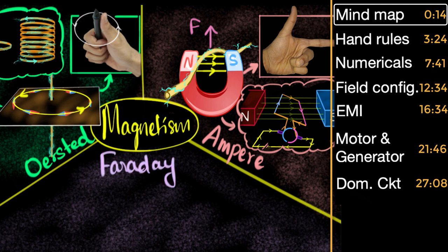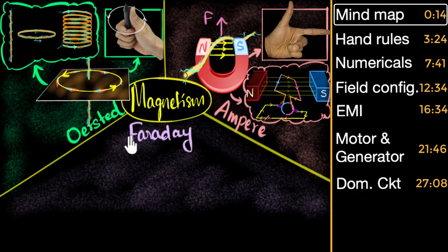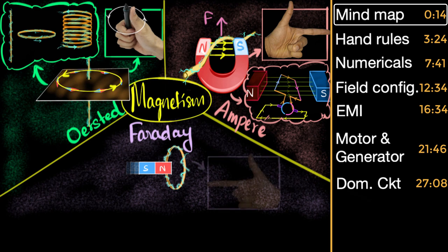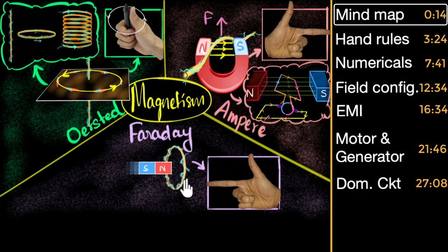That brings us to the last scientist, Michael Faraday. He started asking a big question: if electric current can produce a magnetic field, is the opposite possible — can the magnetic field generate an electric current? To answer this question, he played a lot with magnets and coils. We'll talk in detail about what his discovery was. We need to study a couple of experiments, and this is also where we're going to use Fleming's right hand rule to figure out the direction of the induced current.